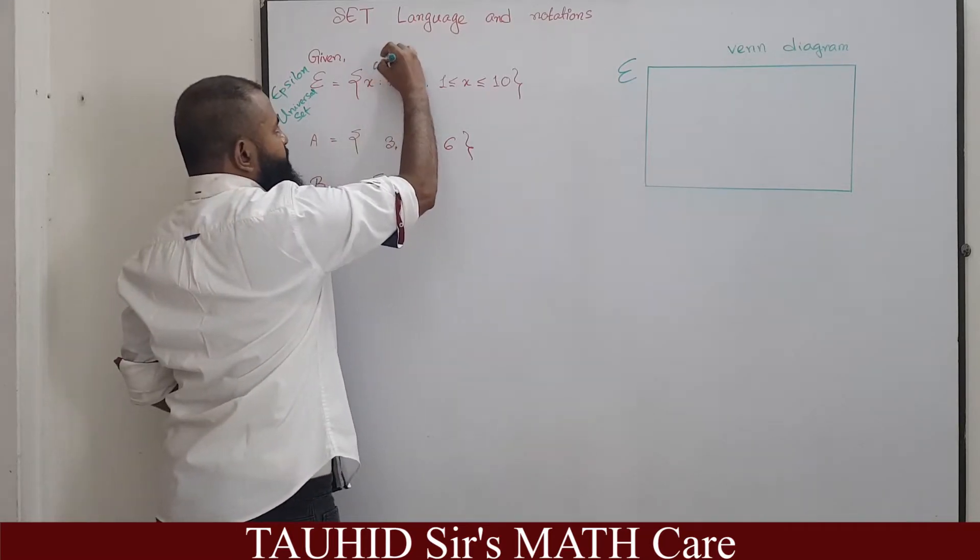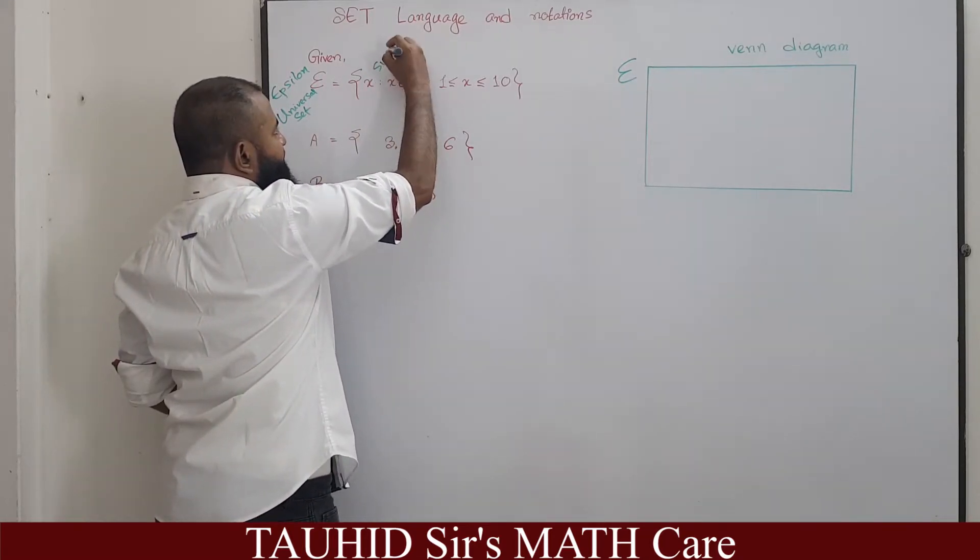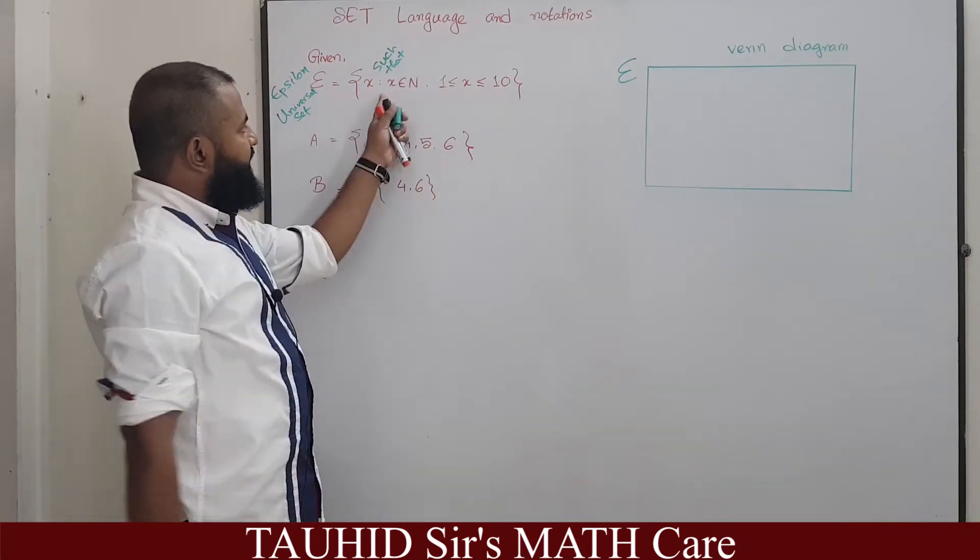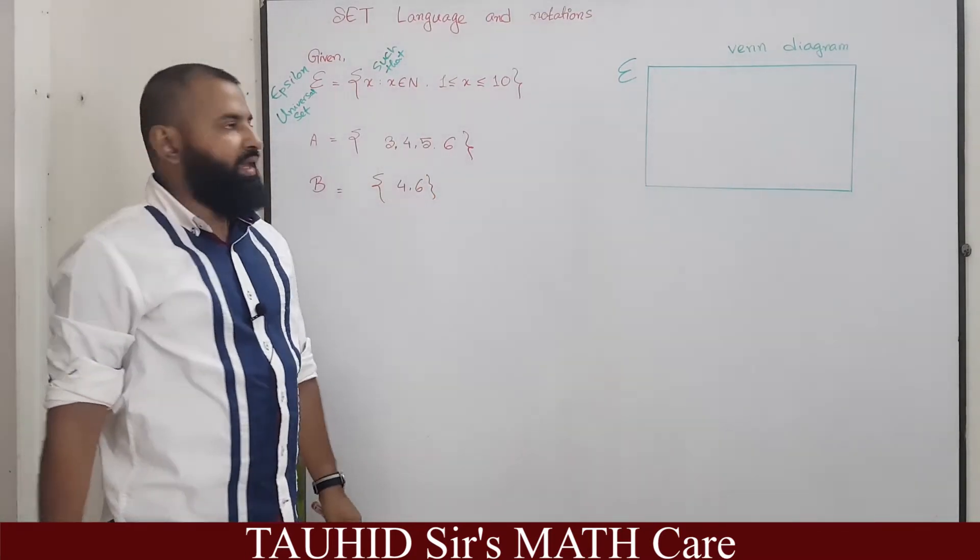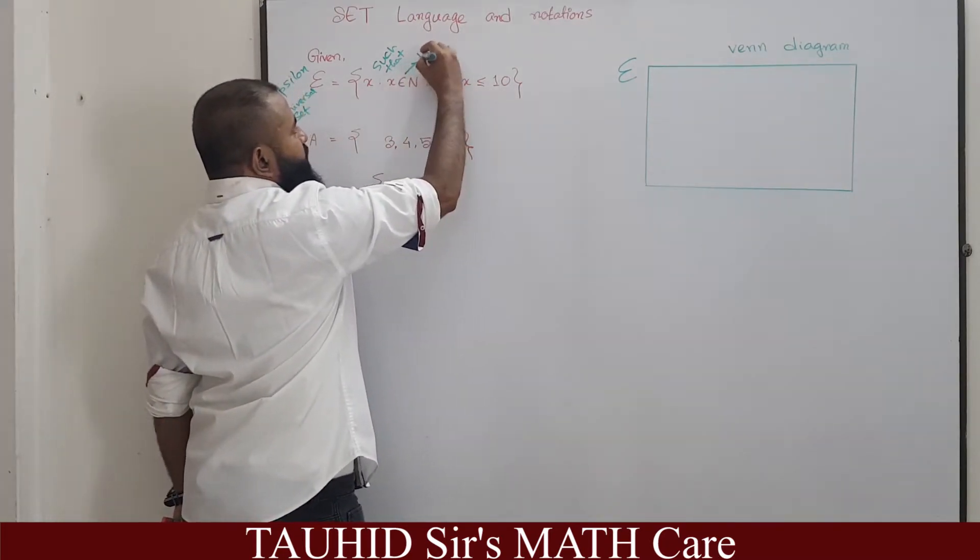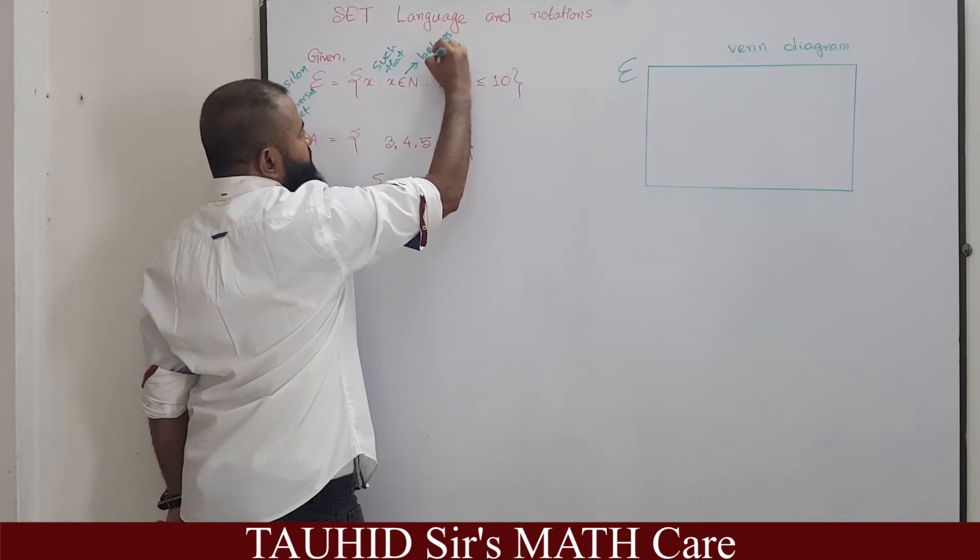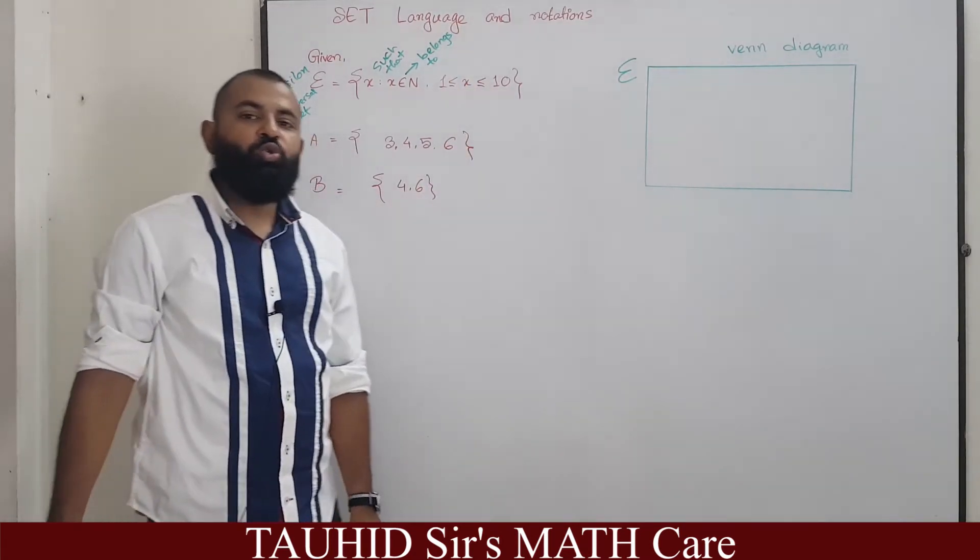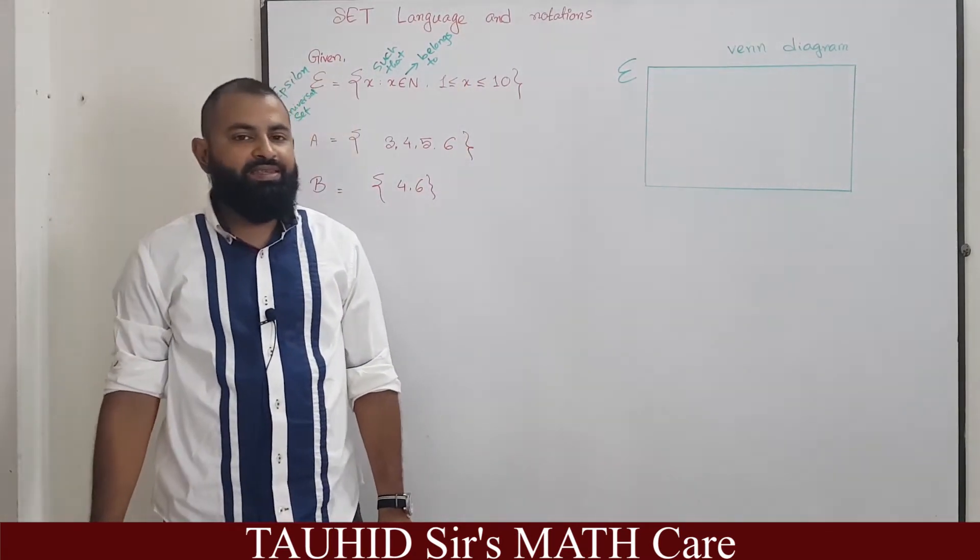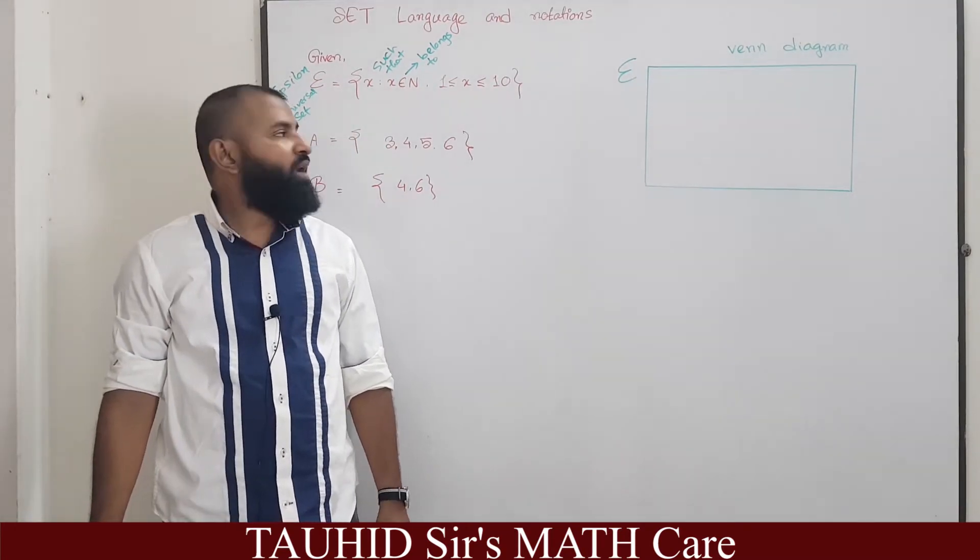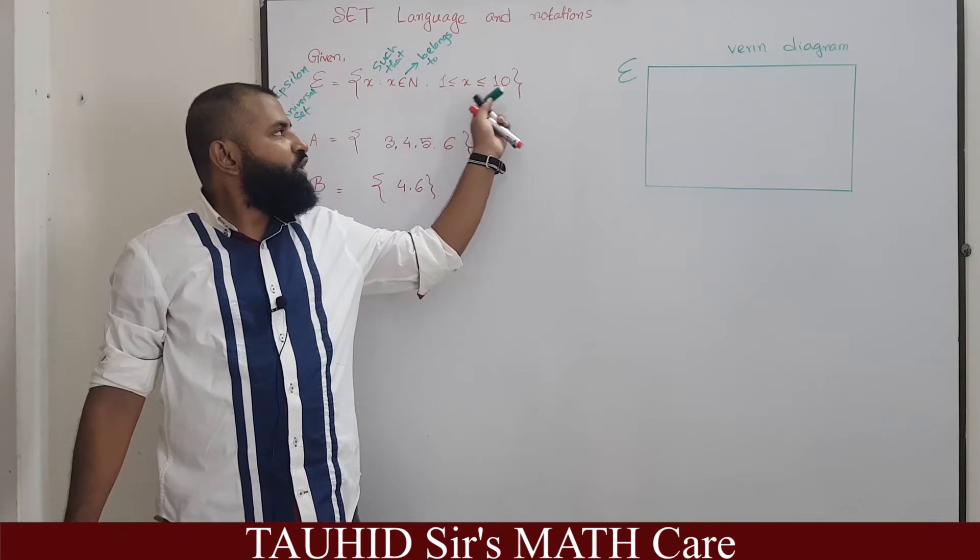X such that x belongs to N, this notation is pronounced as belongs to. X belongs to N means x is a natural number.